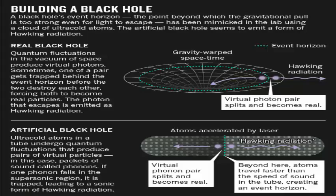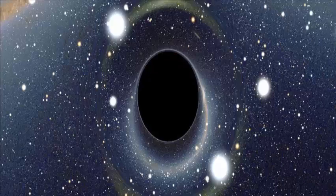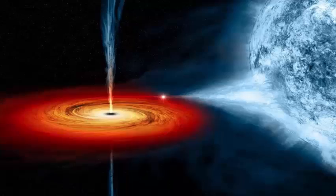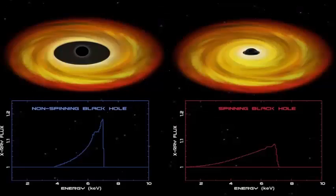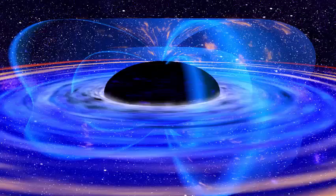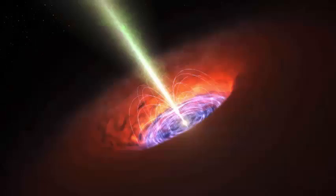To overcome that problem, Jeff Steinhauer, an experimental physicist at the Technion Israel Institute of Technology in Haifa, created a black hole analogue and he noticed it seemed to emit such Hawking radiation on its own, from quantum fluctuations that emerge from his experimental setup.